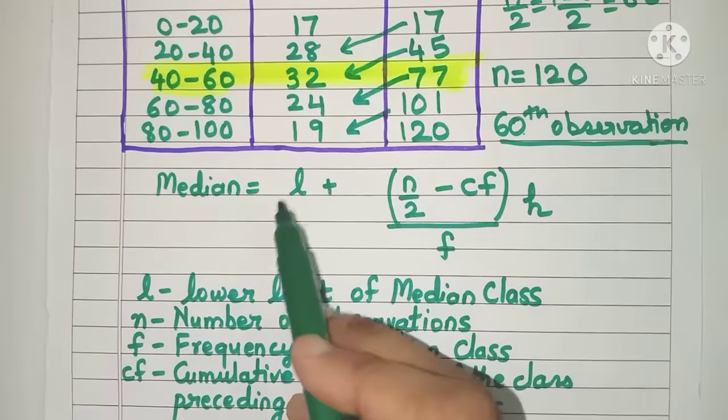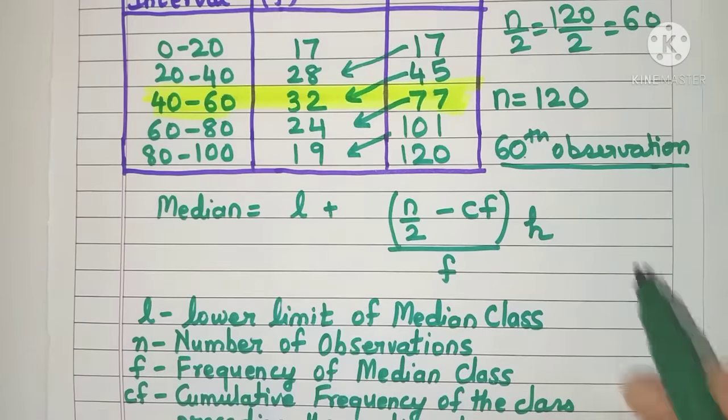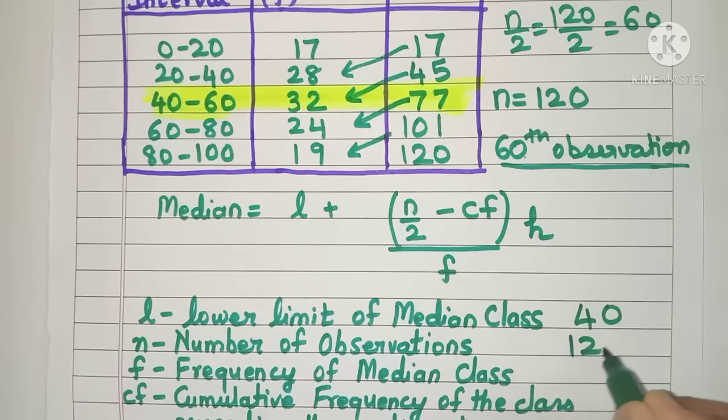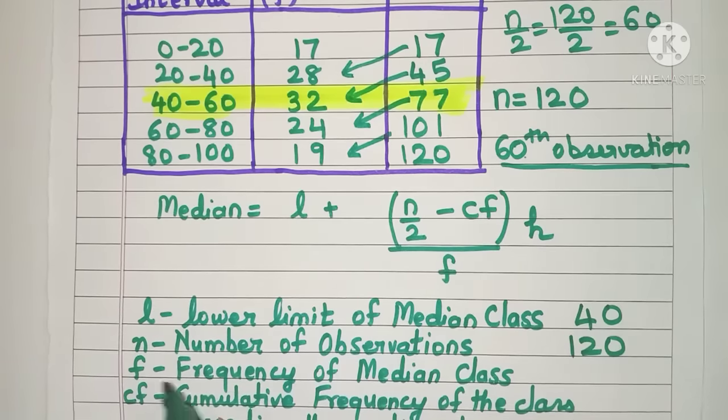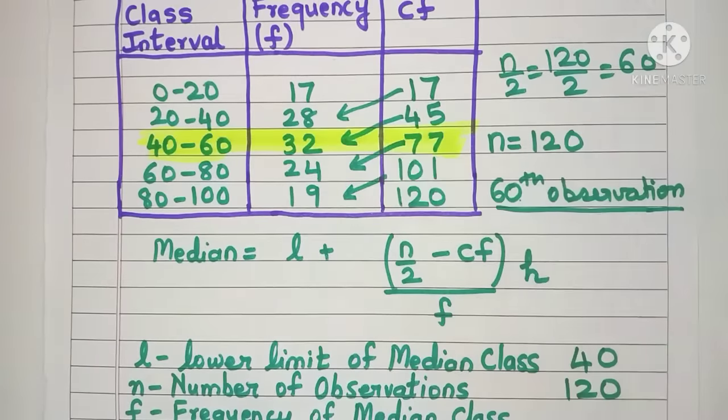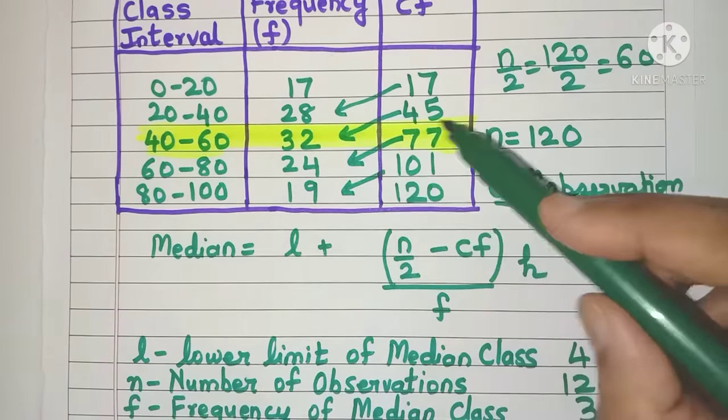Once we know which is the median class, it's very easy to find the other values. Lower limit of median class is L. Where is the lower limit? 40. N number of observations is 120. F is frequency of the median class. What is the frequency of the median class? It's 32.